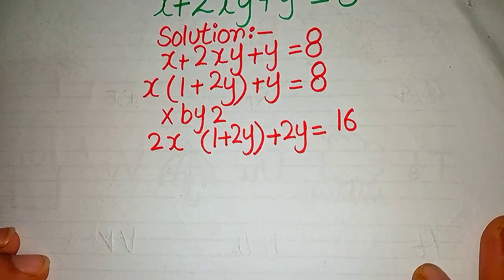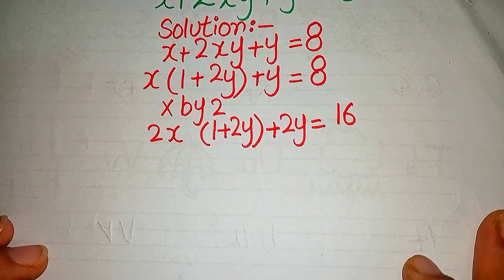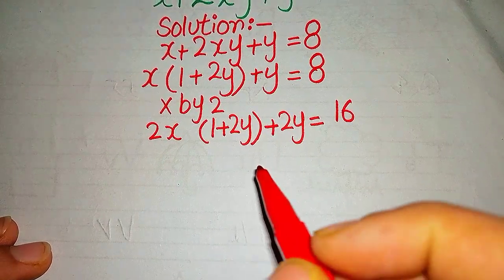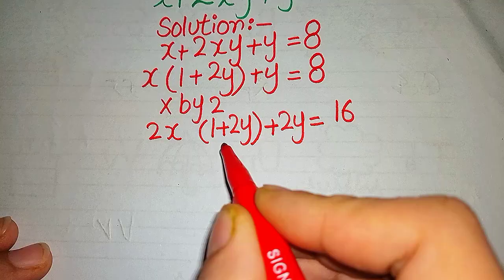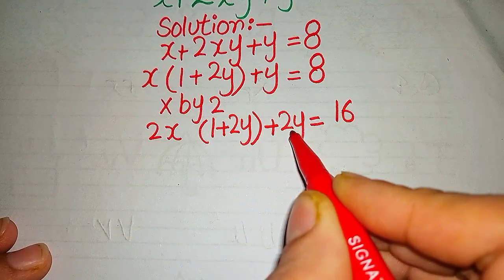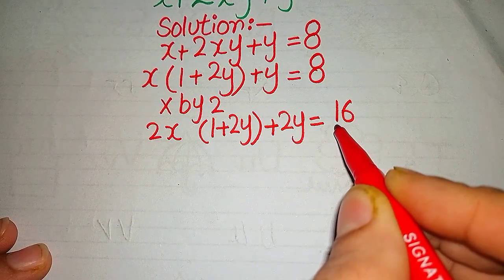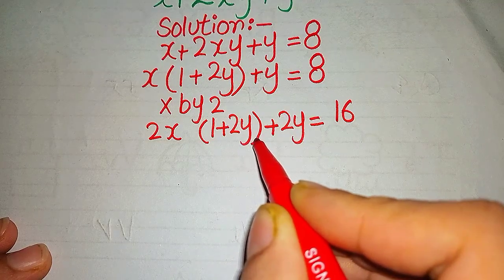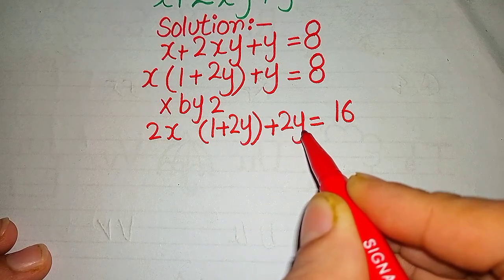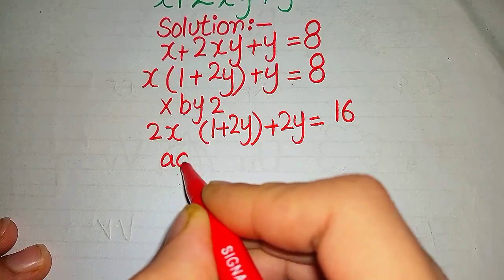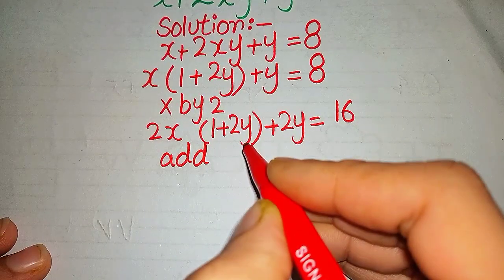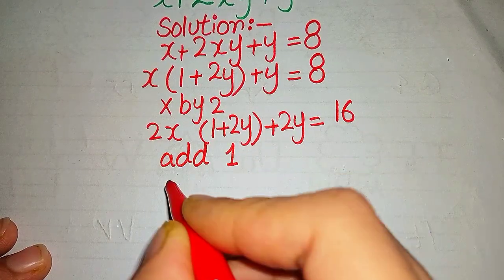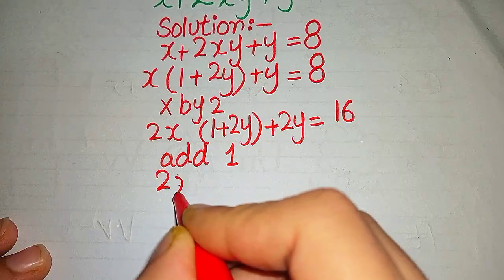Now we can see that we need 1 here with 2y, so we add 1 on all sides of the equation.